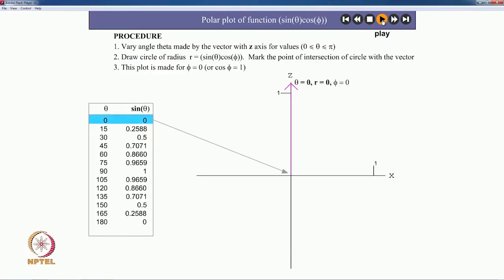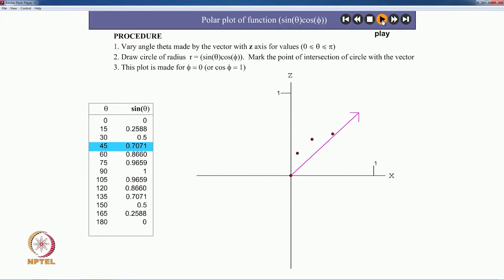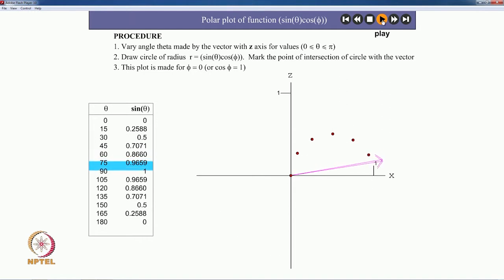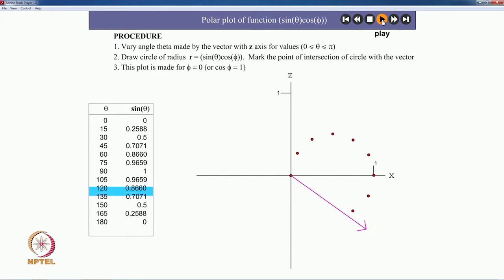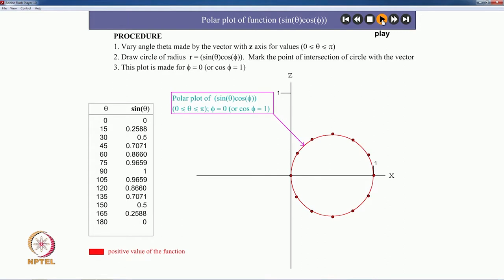You can see sin theta on the polar graph, which does not have any negative values because sin theta is positive in the range 0 to 180 degrees. The value of sin theta is plotted along each theta direction by marking the point. The table gives you the values for each of the thetas. That is sin theta in one direction with cos phi equal to 1 — that is along the x-axis.